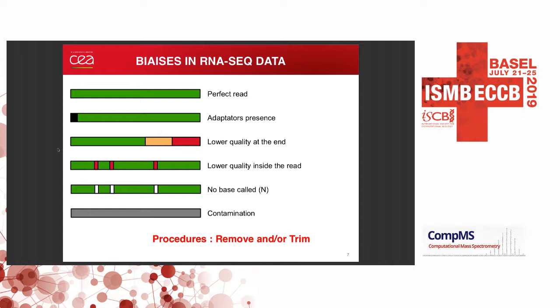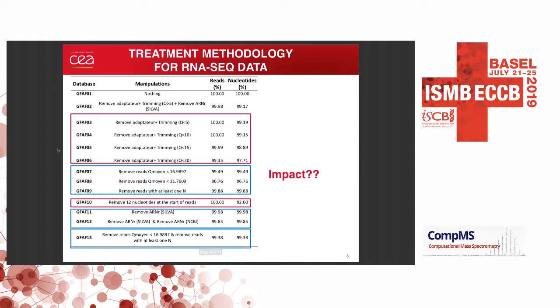In transcriptomic data, you expect only perfect reads, but in reality you will have some adaptor sequences, lower quality at the end or inside the read, missing information, or contamination from human DNA, for example. There are two procedures we can use: removing or trimming the reads. We wanted to test many procedures to see if they have a real effect on proteogenomics analysis or not.